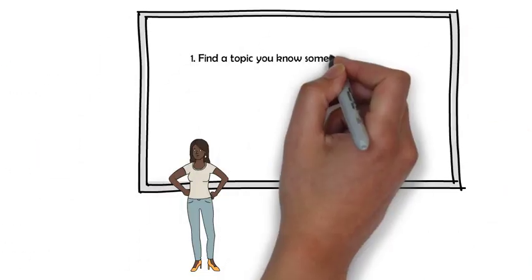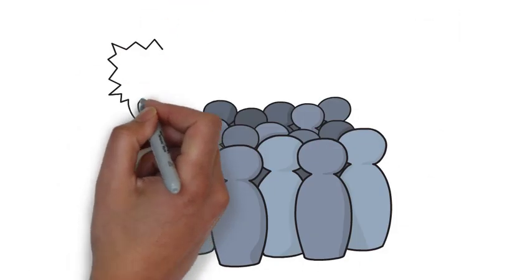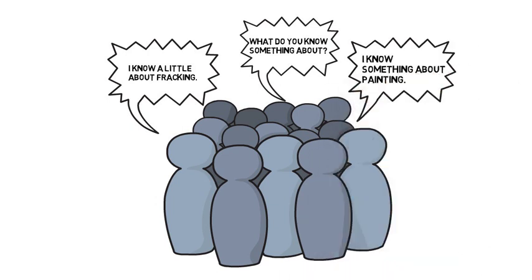First, a warm-up. Students search the site individually for three videos. Now, they're not going to watch these videos — they're just going to choose topics based on the videos: one they know something about, one they know a little about, and one they want to know more about. Then, a milling task. Give everyone time to mill around the room, asking and telling each other about their topics.